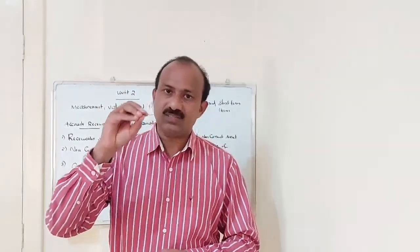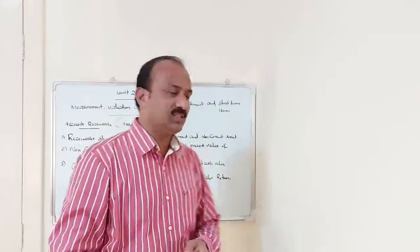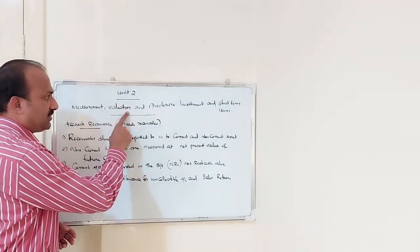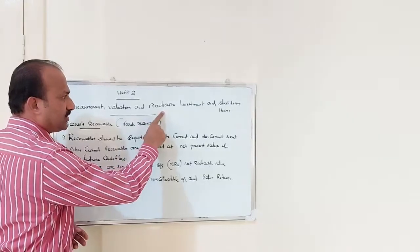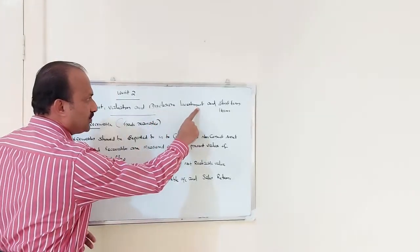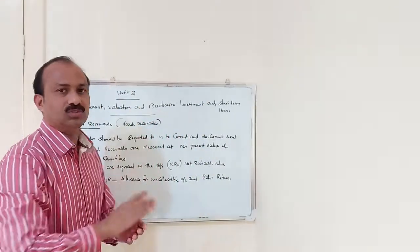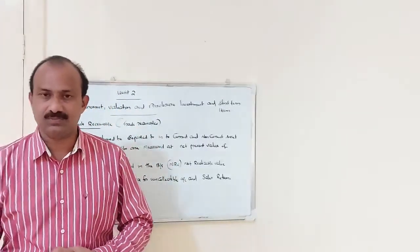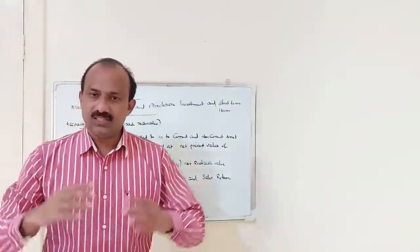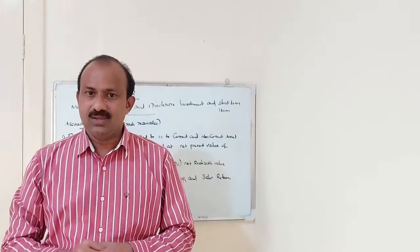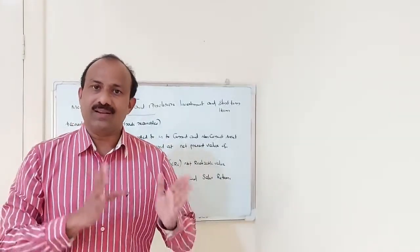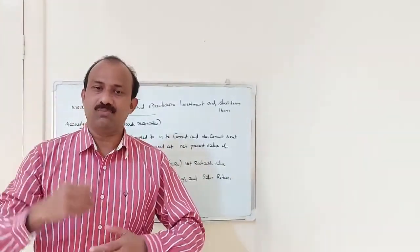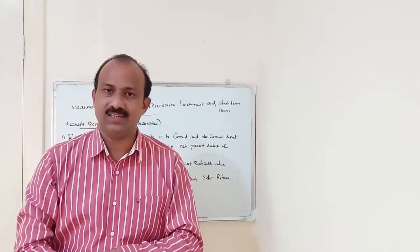Firstly, clearly understand the exact name of the chapter: Measurement, Valuation and Disclosure, Investment and Short-Term Items. Multiple areas are covered in this chapter. This is also part of the basic areas — most of the areas you already know. Anyway, we are going to discuss some important points related to this second unit.